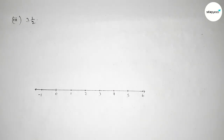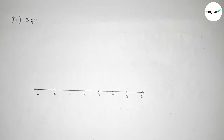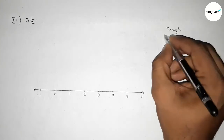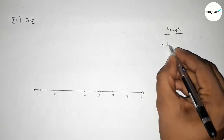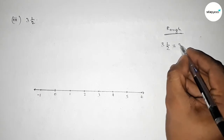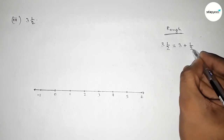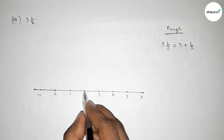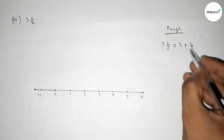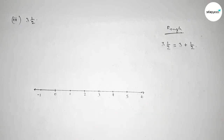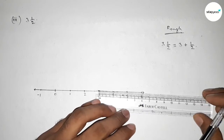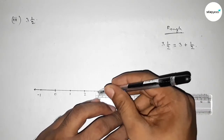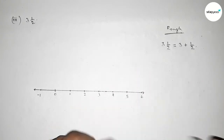Next, representing number three: three and one over two. Similarly, we can write three and one over two as three plus one over two. Mainly we have to represent one over two. First counting three, now representing between three and four. We have to divide the distance between three and four into two equal parts.